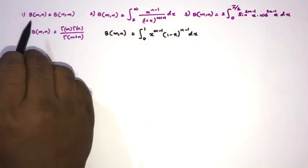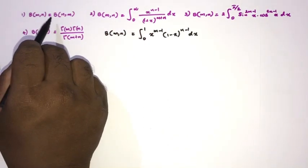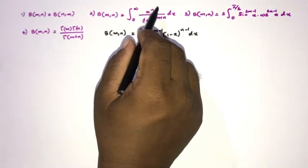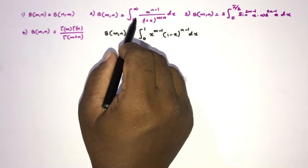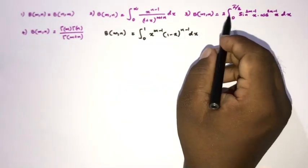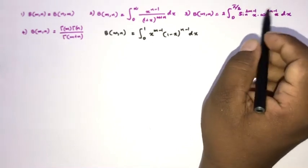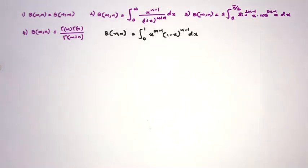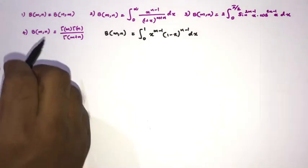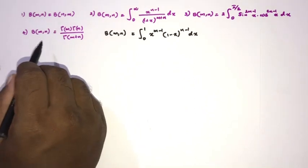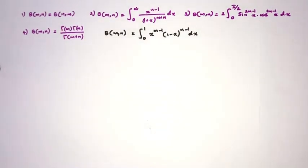We have four properties to cover. First, B(m,n) = B(n,m) — the symmetry property. Second, an integral representation from 0 to infinity: x^(n-1) over (1+x)^(m+n). Third, B(m,n) = 2 times integral from 0 to π/2 of sin^(2m-1)(x) times cos^(2n-1)(x) dx. And finally, the relation between the Beta and Gamma functions: B(m,n) = Γ(m)·Γ(n) / Γ(m+n).